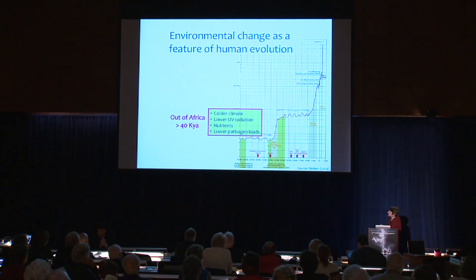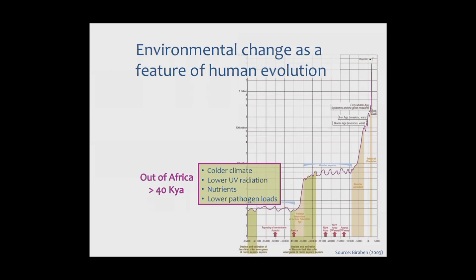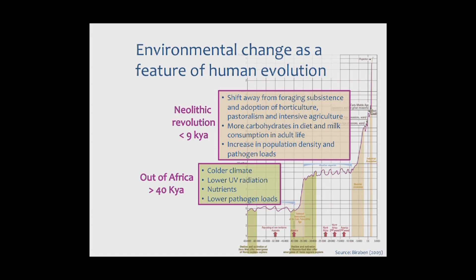The first is the out-of-Africa expansion, which occurred sometime earlier than 40,000 years ago. During this transition, humans were exposed to colder climates, lower degrees of UV radiation, different nutrients, and lower pathogen loads. Then much more recently, sometime after 9,000 years ago, the Neolithic Revolution saw humans shift away from foraging — which characterized much of human existence — toward horticulture, pastoralism, and intensive agriculture.